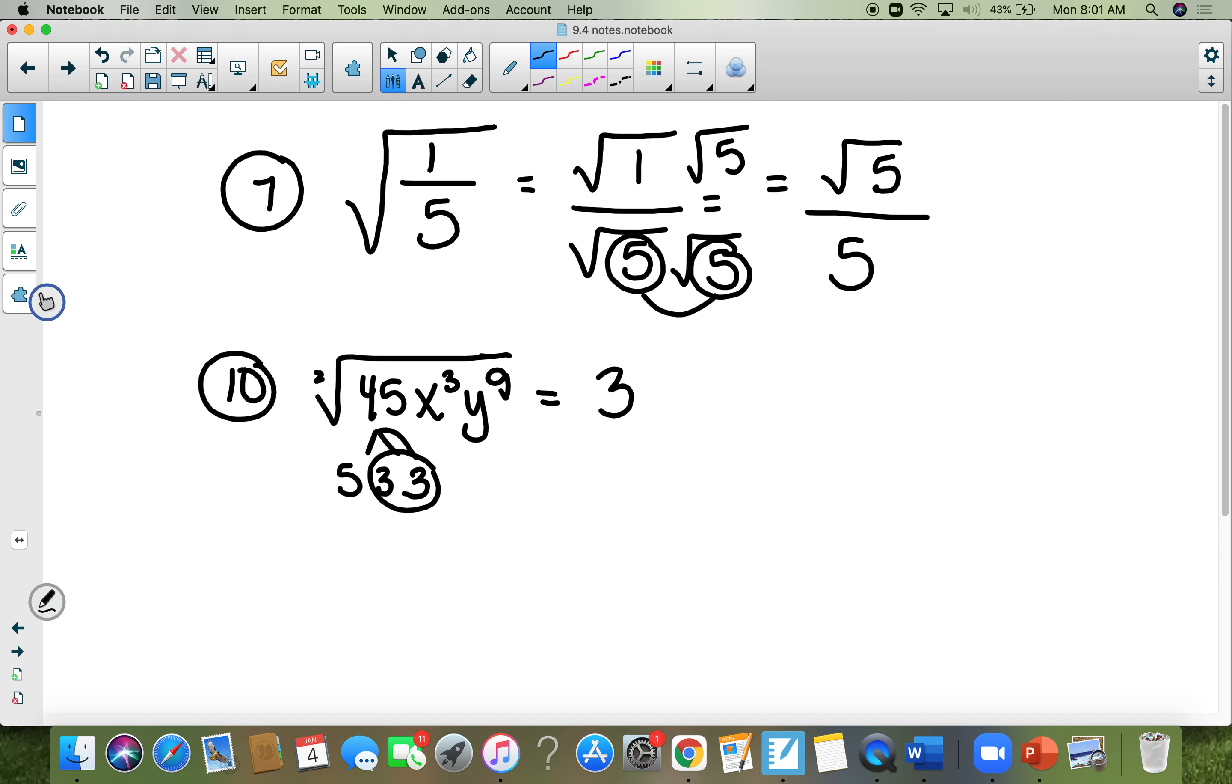I can take out a 3. There are 3 x's, so I can take at least 1 x out. There are 9 y's, I'm just going to show you that there are 9 y's. For every 2, I can take 1 out. I can take out 1, 2, 3, 4 of them. I can take out 4 y's. Everything that doesn't have a buddy has to stay inside. So the number 5 has to stay inside. One of the x's has to stay inside. And one of the y's has to stay inside. That's your final answer for number 10.